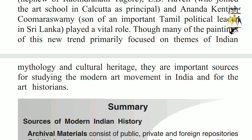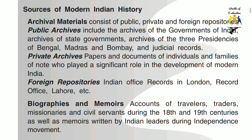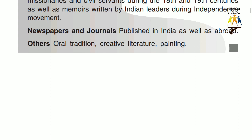Summary: Sources of Modern Indian History. Archival materials consist of public, private and foreign repositories. Public archives include the archives of the Government of India, archives of state governments, archives of the three presidencies of Bengal, Madras and Bombay, and judicial records. Private archives comprise papers and documents of individuals and families of note who played a significant role in the development of modern India. Foreign repositories include the India Office Records in London, Record Office Lahore, etc. Biographies and Memoirs are accounts of travelers, traders, missionaries and civil servants during the 18th and 19th centuries, as well as memoirs written by Indian leaders during the independence movement. Newspapers and Journals published in India as well as abroad. Others include Oral Tradition, Creative Literature, and Painting.